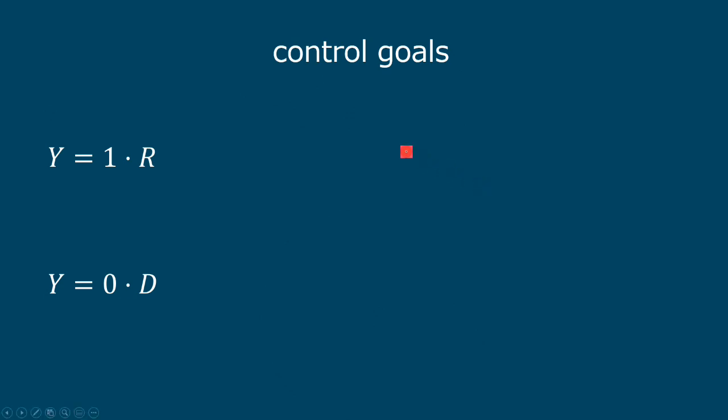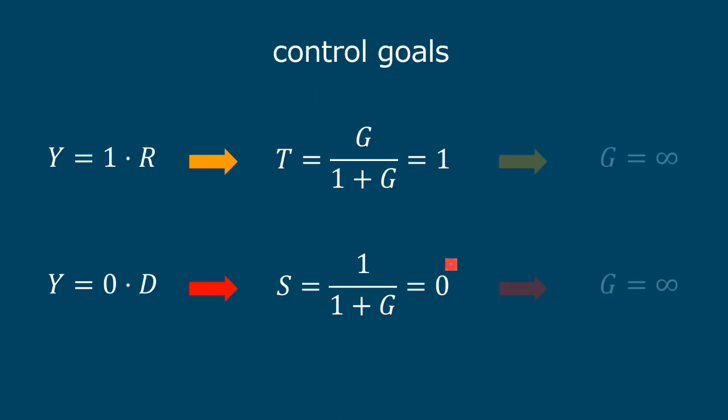From the control goals perspective, we want the output Y to be equal to the reference and at the same time that the output Y be completely insensitive to the disturbance D. So, this means we want T equal to 1 and we want S equal to 0. And this is possible only if the open loop gain is much larger than 1, but we also know that this is not possible for all frequencies.